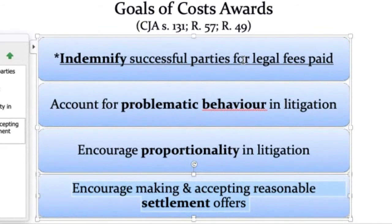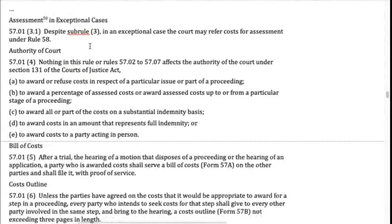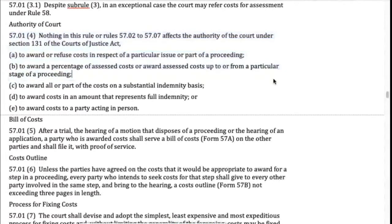But if they don't settle and the court has to deal with costs, then we get into rule 57.01 sub 4 and sub 5. Rule 57.01(4) reinforces the discretionary nature of this — a judge after hearing a motion can make a cost award, or they can say 'costs will be in the cause,' meaning: I'm not going to make a cost award on this motion; we're going to see what happens after the trial and make a cost award for everything then. Rule 57.01(4)(e) awards costs to a party acting in person — a fairly new rule, partly creditable to Professor Julie McFarlane and the self-represented litigants project — meaning self-reps can get cost awards.